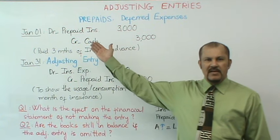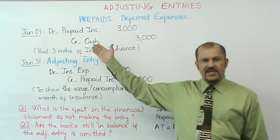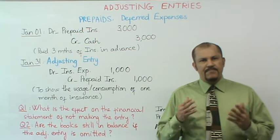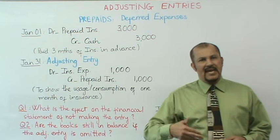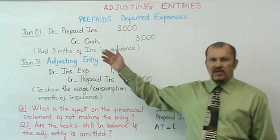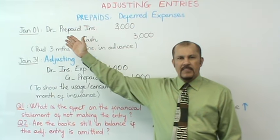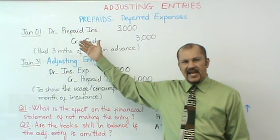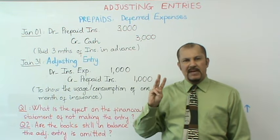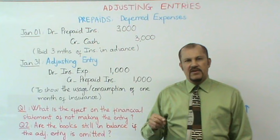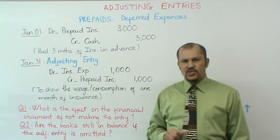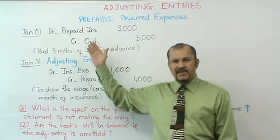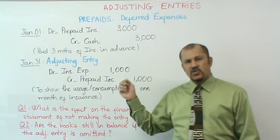Let's look at the example involving prepaids as a first adjusting entry situation. A prepaid is nothing but making a payment in advance. In this example, on January 1st we made a payment of $3,000 in advance for three months — January, February, and March. The journal entry to record this transaction would be a debit to prepaid insurance and a credit to cash.